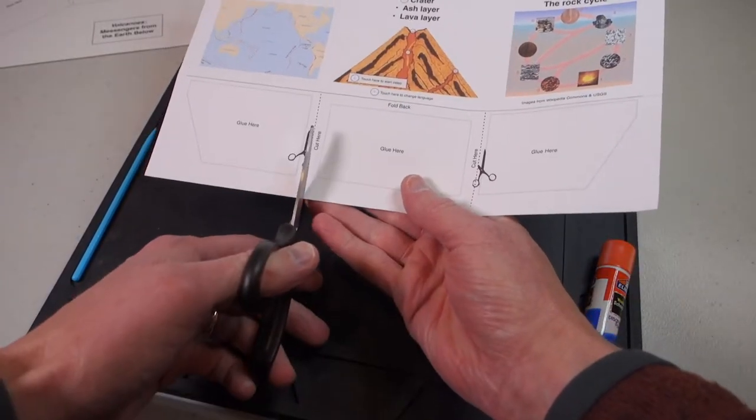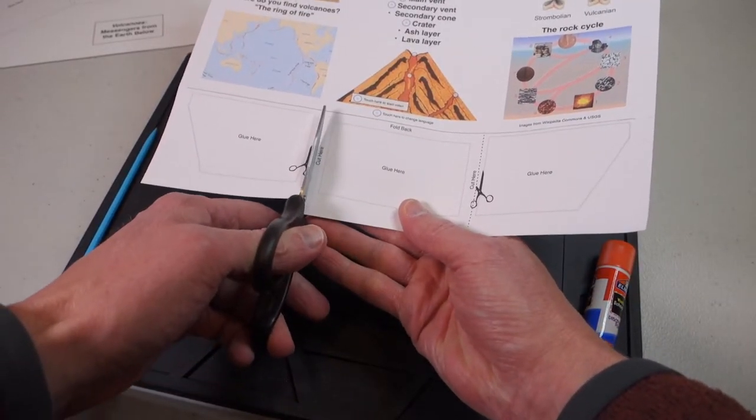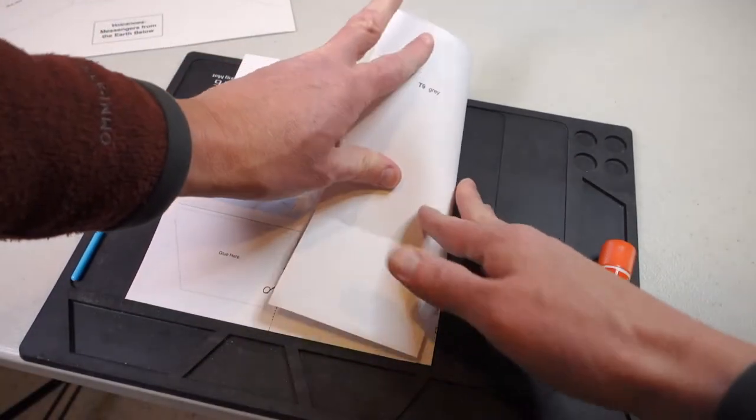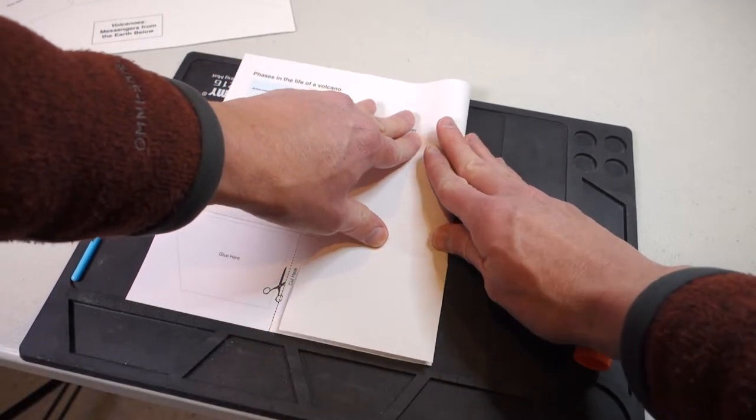Begin making the model by cutting along the dashed lines at the bottom of the Volcano project. Then fold the model into thirds so that it'll stand up properly.